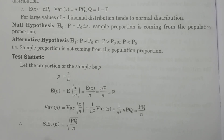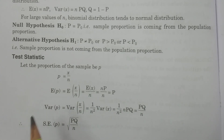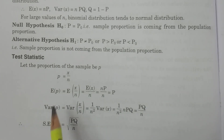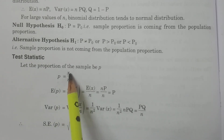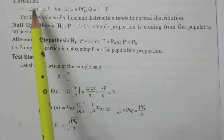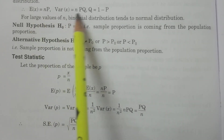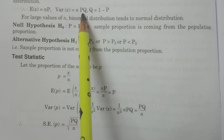For example, if the sample consists of 100 units, out of which the successes are only 60, then small p equals 60 divided by 100. That is how small p is calculated. We can use this because x's distribution is known — its expectation is np and variance is npq, from the binomial distribution.